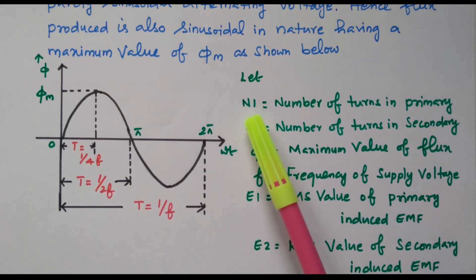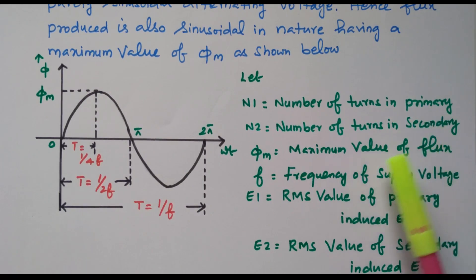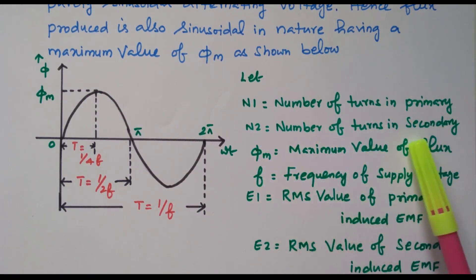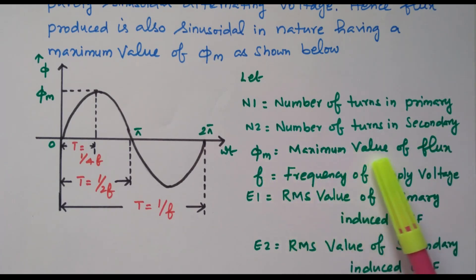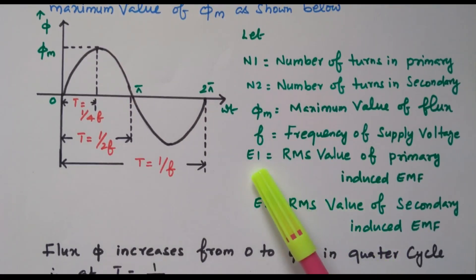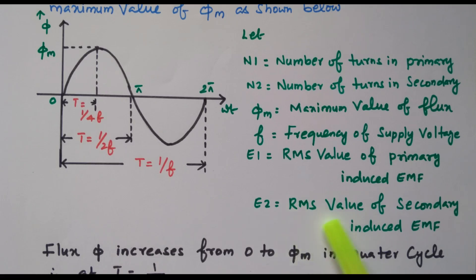Now we define our variables: N1 is the number of turns in the primary winding, N2 is the number of turns in the secondary winding, φM is the maximum value of flux, F is the frequency of the supply voltage, E1 is the RMS value of the primary induced EMF, and E2 is the RMS value of the induced EMF in the secondary winding.